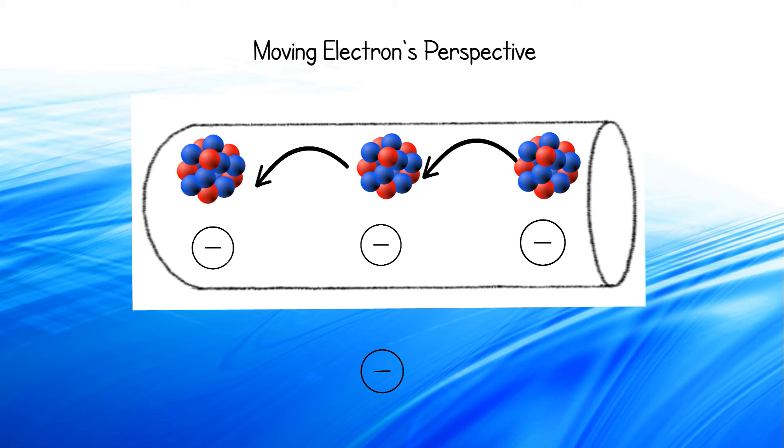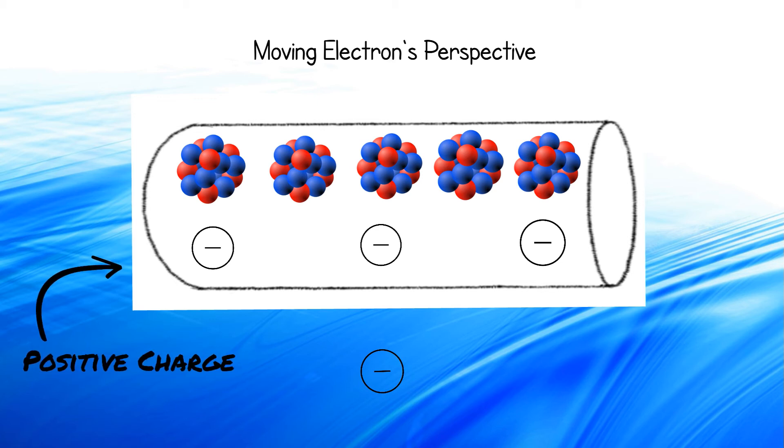Now, here comes the mind-blowing part. Since the electron is moving, the space between the cations is also moving in its perspective. This causes the space between them to be slightly contracted. As a result, there is a higher density of cations within the wire than the electrons. So the wire gains a positive charge. This causes the electron to be attracted to the wire.